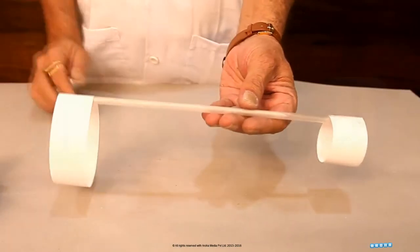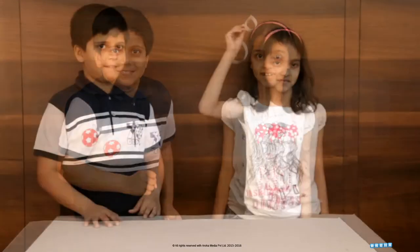And our glider is ready. Hold the straw in the middle with the small ring in the front. You can throw this with a thrust from some height and see how it glides.